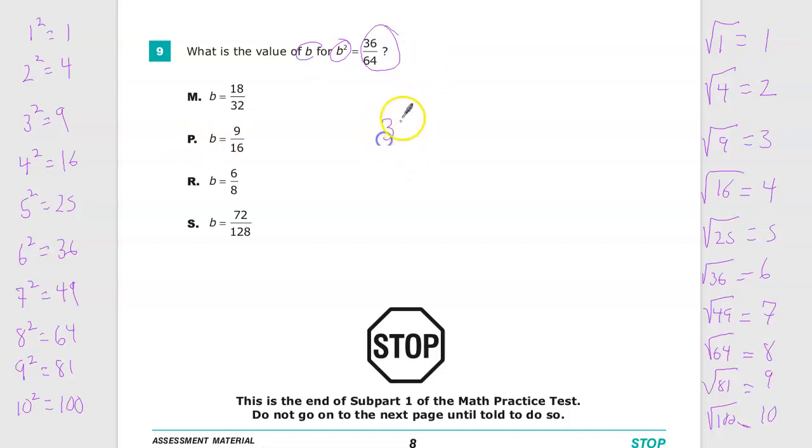So I need to do the square root of 36 over 64. The nice thing is you can do the numerator separate from the denominator. And since I have my fancy list, I just go to find the square root of 36. There it is, it's 6. And then I find the square root of 64, it's right there, it's 8.